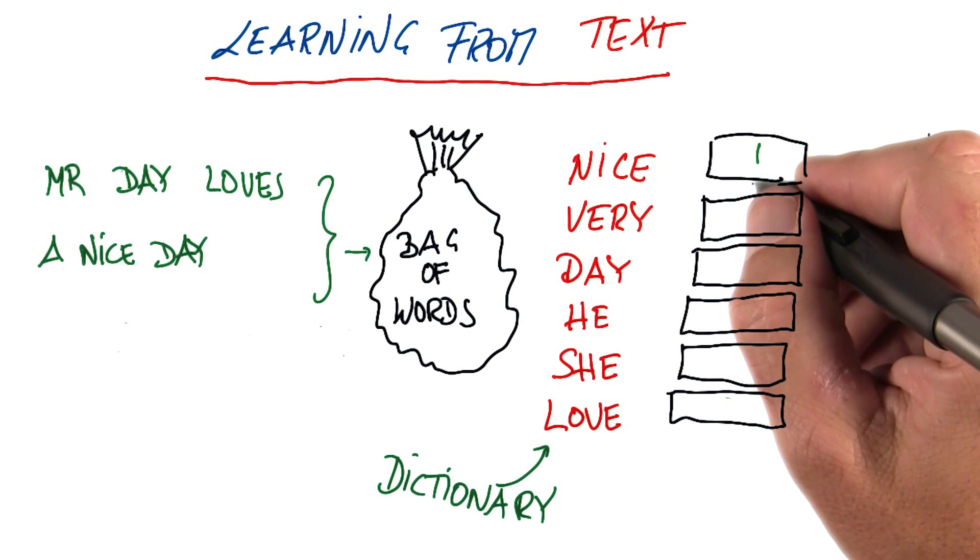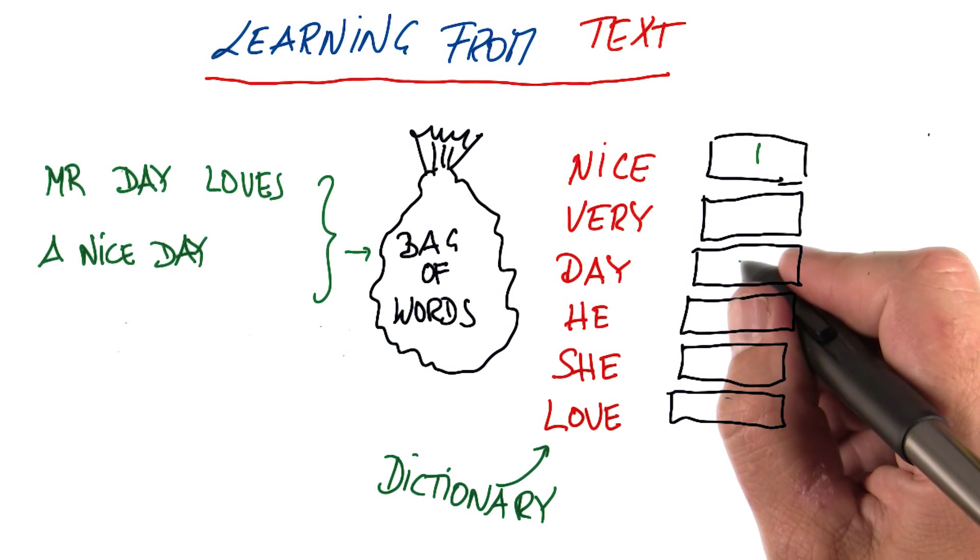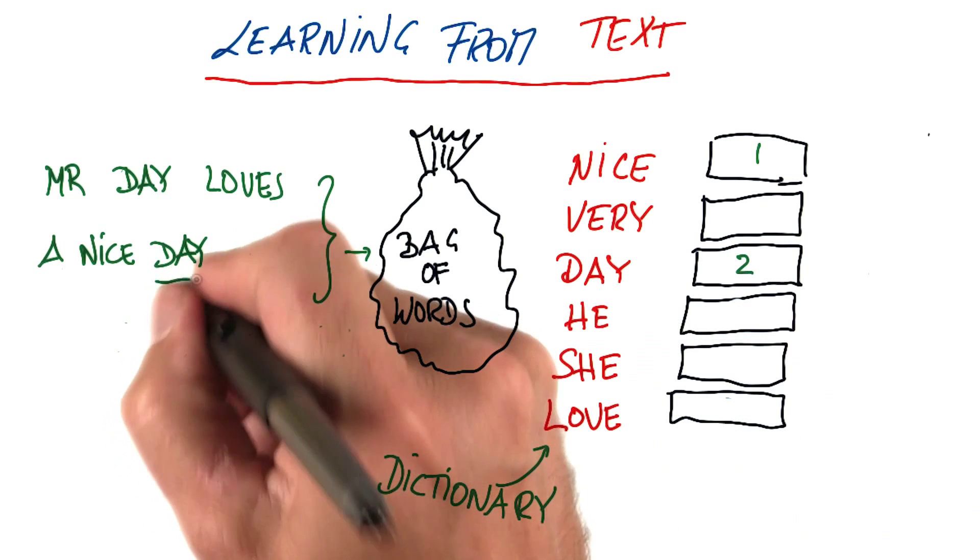I argue nice occurs once. Day actually occurs twice now, so you have a dual occurrence of day.